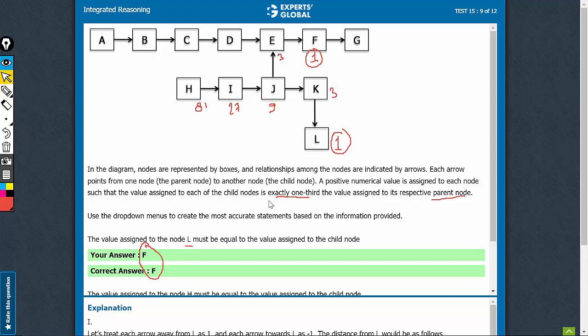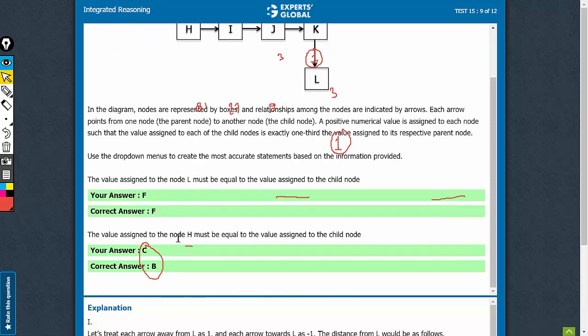Look at the second part of the question now. The value assigned to node H must be equal to the value assigned to the child node, which one?